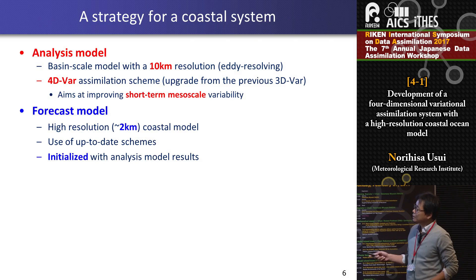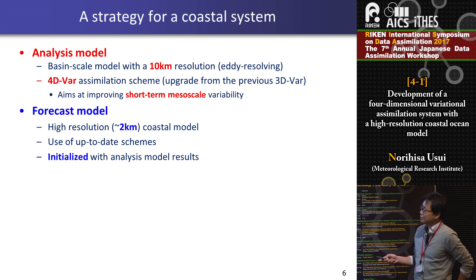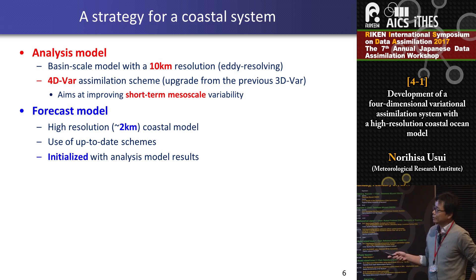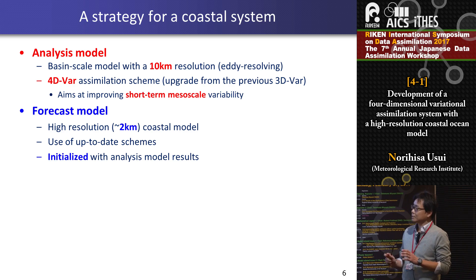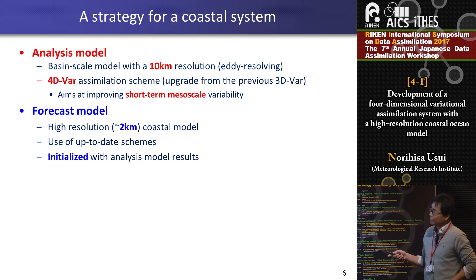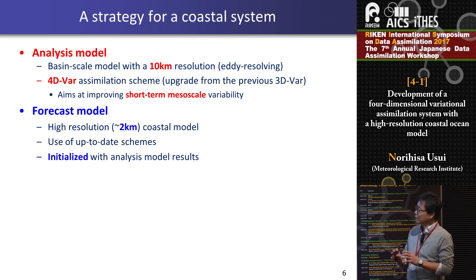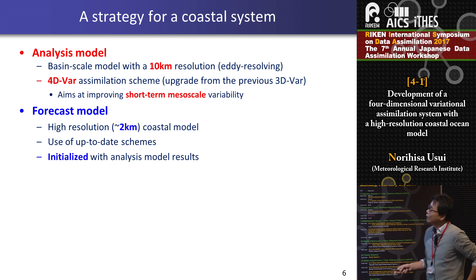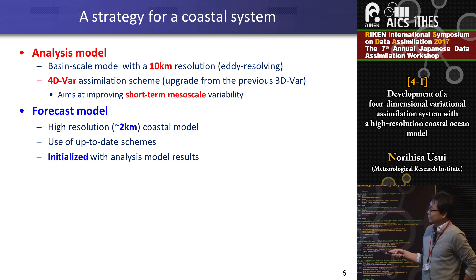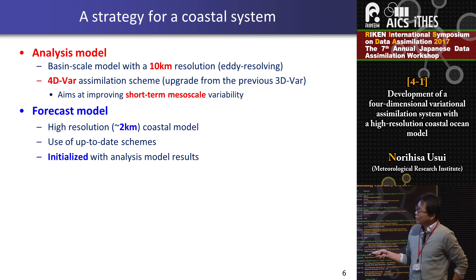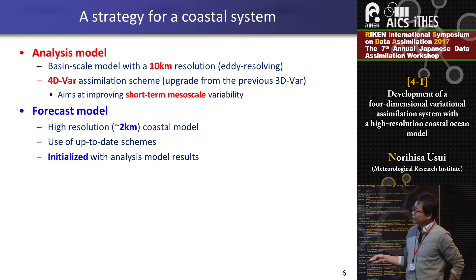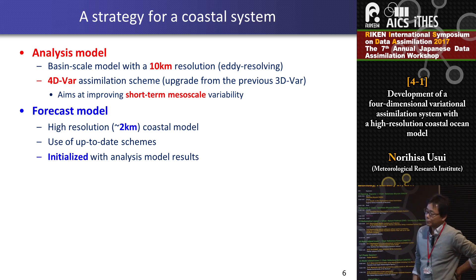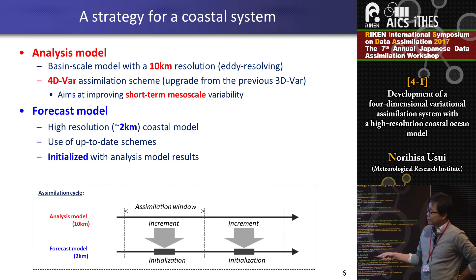We have developed two models: one is an analysis model and the other is a forecast model. Data assimilation is performed with the analysis model. Its resolution is about 10 kilometers — the same as the present operational system. But the analysis scheme was upgraded from 3D-var to 4D-var in order to improve short-term mesoscale variability, which is very important for interaction between coastal seas and the open ocean. The forecast model is based on a high-resolution coastal model with a resolution of about 2 kilometers. We utilize up-to-date numerical schemes and also incorporate an initialization scheme to initialize the forecast model using the 4D-var analysis field. This is a schematic view of the assimilation cycle of these models.